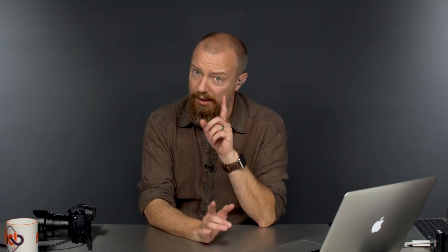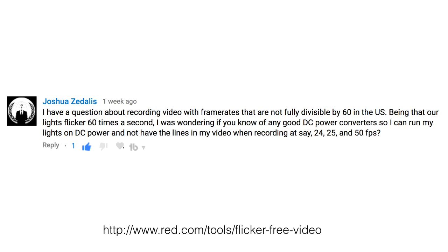I'm going to reference you to another website, which is a really great tool. The question that came in from Joshua Zadalas is: I have a question about recording video with frame rates that are not fully divisible by 60 in the United States. Being that our lights flicker at 60 times a second — that's 60 hertz — I was wondering if you know of any good DC power converters so I can run my lights on DC power and not have lines in my video when recording at 24, 25, and 50 FPS.